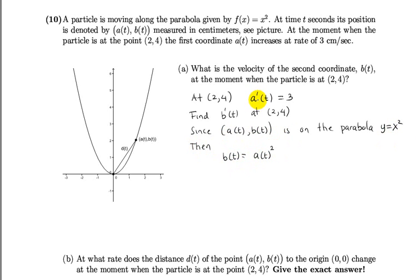Now, in order to find the relationship between the rates of a and the rates of b, we just need to take the derivative of both sides with respect to t. So b'(t) - be careful, we need to use the chain rule here - 2a(t) times a'(t). Then at (2,4), we have b'(t) = 2 times - remember that a(t) is the first coordinate, and at (2,4) the first coordinate is 2, so a(t) is 2 and a'(t) is 3. Therefore, b'(t) is 12 and the units is centimeters per second.